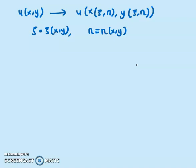In order for the transformation to exist, we must make sure the determinant of the Jacobian is not equal to zero. With that condition satisfied, we can use the chain rule to find the second derivatives of U with respect to X and Y.